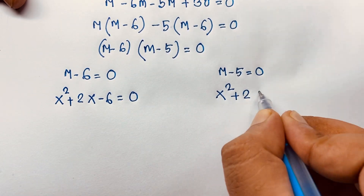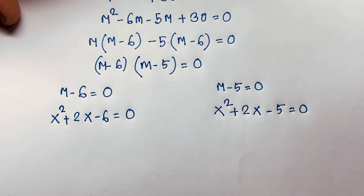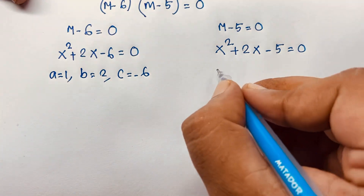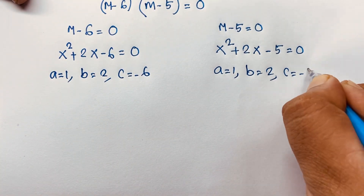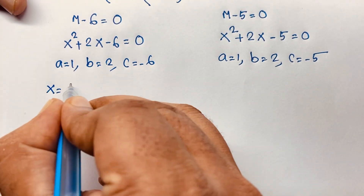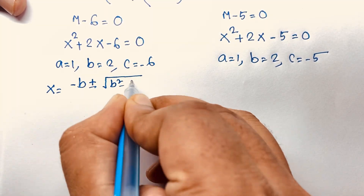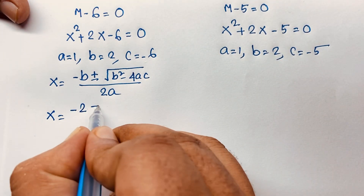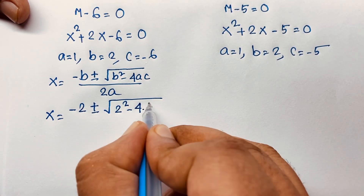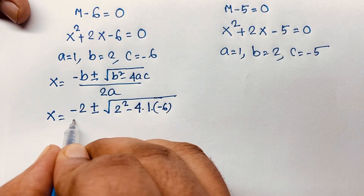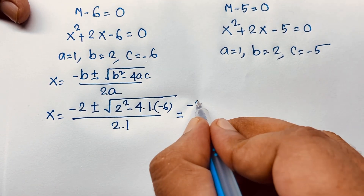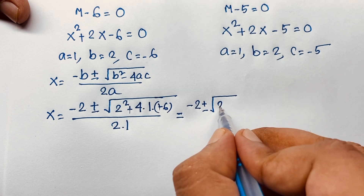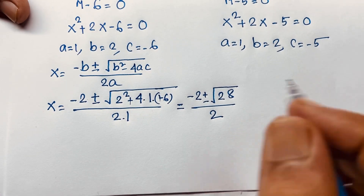Using the quadratic formula with a equals 1, b equals 2, c equals negative 6: x equals negative b plus or minus square root of (b squared minus 4ac) over 2a, which gives negative 2 plus or minus square root of (4 plus 24) over 2, that is square root of 28 over 2.